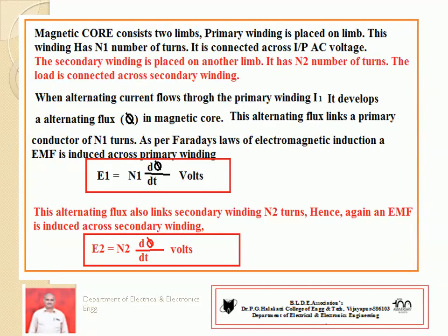The self-induced EMF across the primary winding is E1, equal to N1 times d-phi by dt, where N1 is the number of turns of the primary winding and d-phi/dt is the rate of change of flux linkage. That means the flux linking with the conductor should change; if it remains a constant value, then there is no induced EMF because there is no d-phi/dt. As time changes, flux should also change — hence it is called changing flux. Similarly, the changing flux also exists across the secondary winding with N2 turns, and hence E2 gives the secondary induced EMF, called mutually induced EMF, which is induced due to the current of coil number 1.